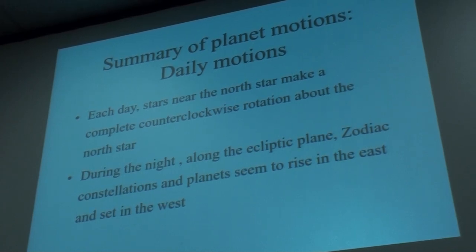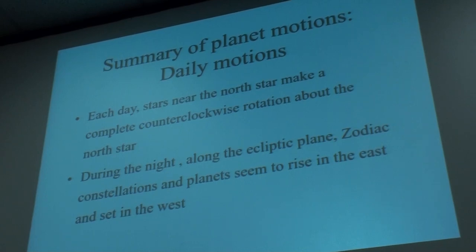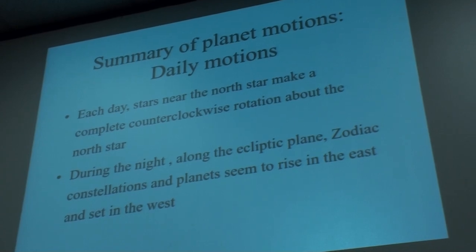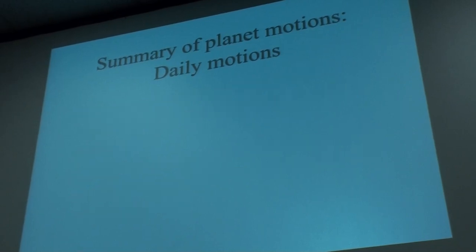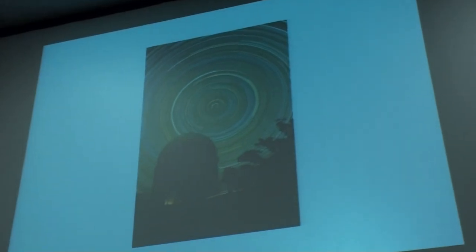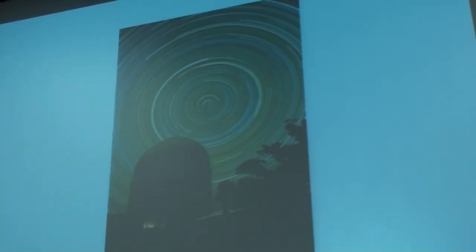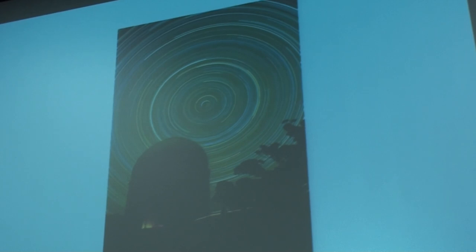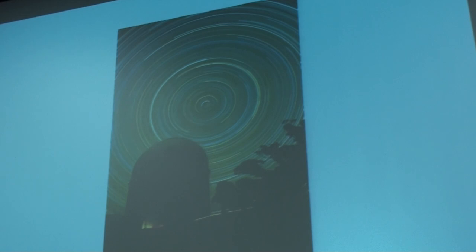Let's summarize our daily motions that we've looked at so far. If you're close to the North Star, those stars nearby appear to make counterclockwise rotations about the North Star. We can see that in this time-lapse photo showing the apparent paths of all those stars. But that's due to the Earth's rotation — that's why I'm calling it apparent. It's not real; it's because the Earth is changing its perspective with respect to all of those stars.